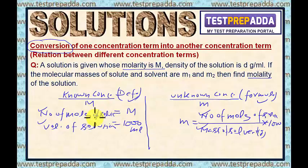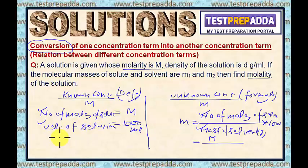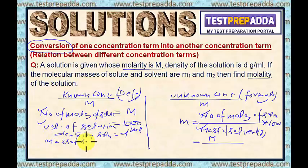Look at the first data: number of moles of solute. Here, number of moles of solute can be directly substituted. The only thing is we have to find mass of solvent. But what is given? Volume of solution and density of solution. If density of solution is given and volume of solution is given, we can find mass of solution: volume into density, which gives us 1000D. The unit of density is gram per ml and volume is in ml, so mass of solution will be in grams.